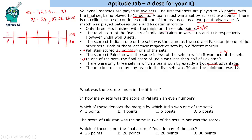There were only three sets in which a team won by exactly a two-point advantage. So three sets were won by two points each. Two-point advantage happens when the game goes beyond the threshold. So two-point advantage can happen in two cases: either it is a normal game going beyond threshold.